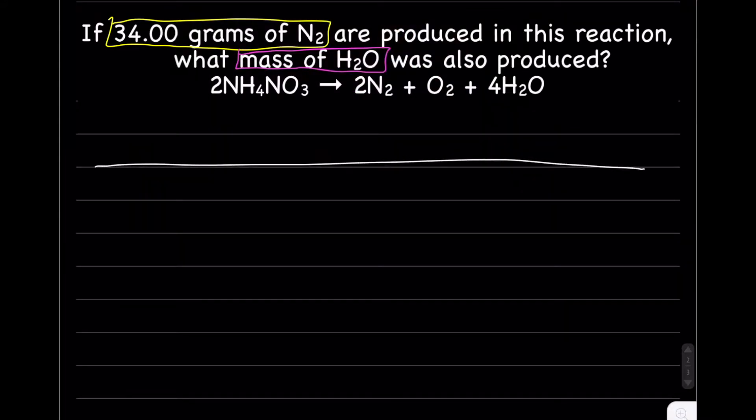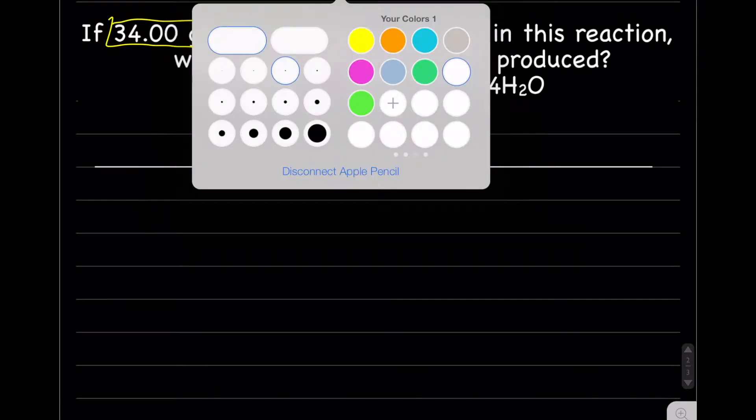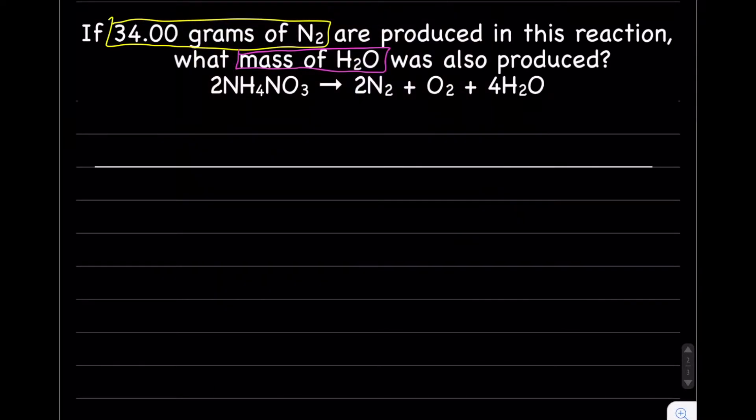So first step, write the grid and put our known in the grid. So we have 34 grams of nitrogen over one.